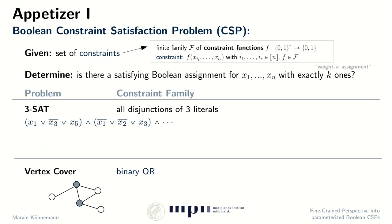Another quite different problem would be the vertex cover problem. Here you are given some undirected graph G and you want to find a set of nodes that covers all the edges. This problem we could express with a constraint family that includes just the single binary OR function.